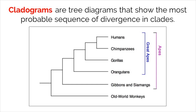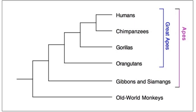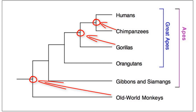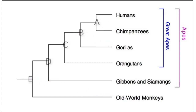Cladograms are tree diagrams that show the most probable sequence of divergence in clades. With this information, we can begin to identify which organisms share a more recent common ancestor compared to others. For example, take a look at this cladogram of humans and other primates. It shows that humans shared an earlier common ancestor with chimpanzees than with gorillas, and if we go back far enough, humans share a common ancestor with Old World monkeys, which also gave rise to all of the other apes in the diagram. Looking at these labels, at what node did humans share a common ancestor with Gibbons? If you answered D, you are correct.